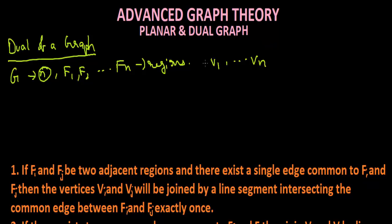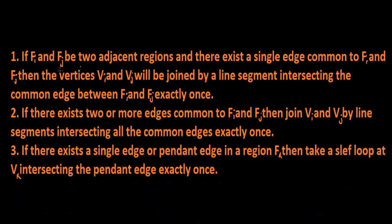To obtain the dual of a graph we need to follow these steps. Step one: if fi and fj are two adjacent regions, there exists a single edge common to fi and fj, and the vertices vi and vj will be joined by a line segment intersecting the common edge between fi and fj exactly once.